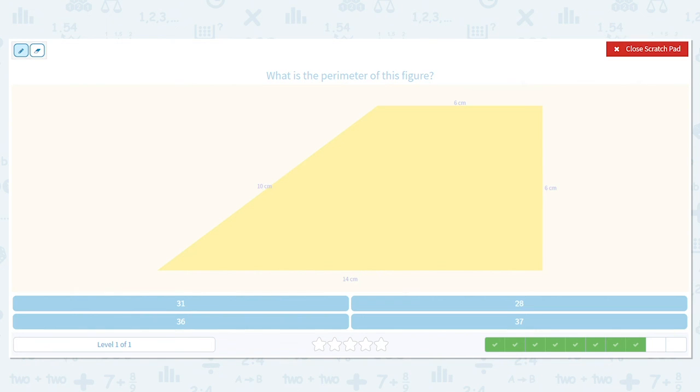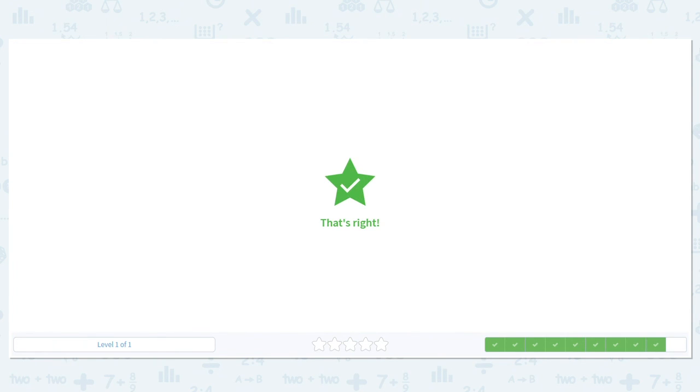Next one. Here we go. We have 10, 6, 6, 6, and 14. Now look, I can do 10 and 6. That's 16. And look at what's 6 plus 14. That's 20. So now it's easy to add 16 plus 20. 16 plus 20 is 36. So 36 centimeters is the perimeter.